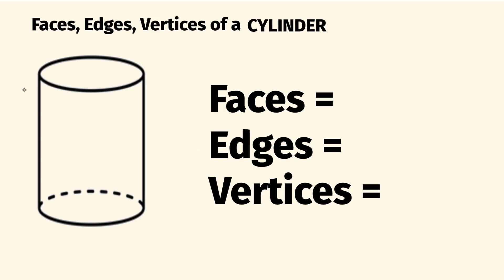So, let's start out by having a look at the number of faces. These are the amount of flat surfaces. With a cylinder, we have this flat surface on the top here, which is a circle, and this flat surface on the bottom, which is a circle. And a cylinder has two faces there.